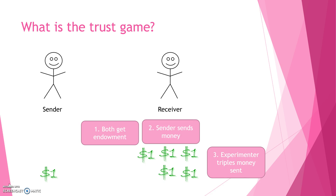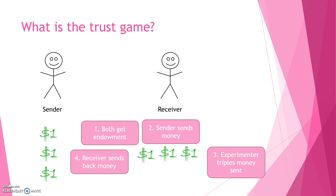After the sender sends money, the experimenter triples the amount the sender sent to the receiver. Finally, the receiver sends back money to the sender. The receiver can send any amount from $0 up to the amount the receiver had after the experimenter tripled the amount of money sent.